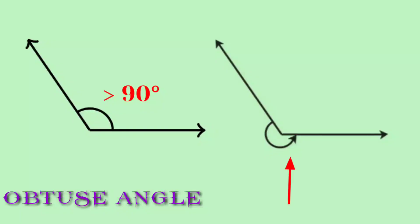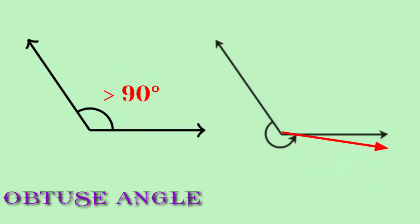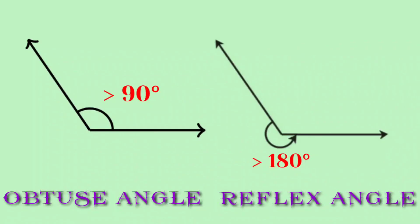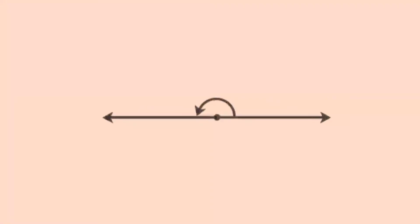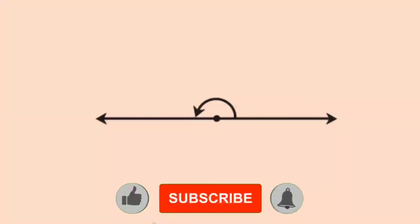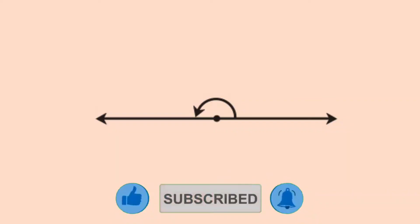Let's look at the second angle. At the point of origin there is a curved arrow showing the angle between the two arrows. This angle is 180 degrees, so it is a straight angle.